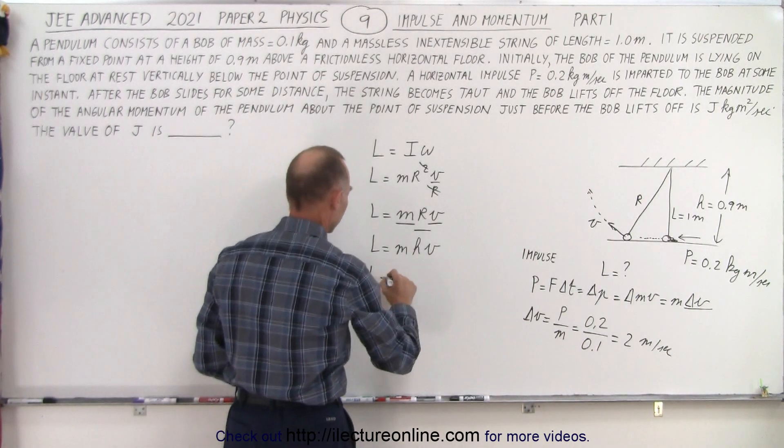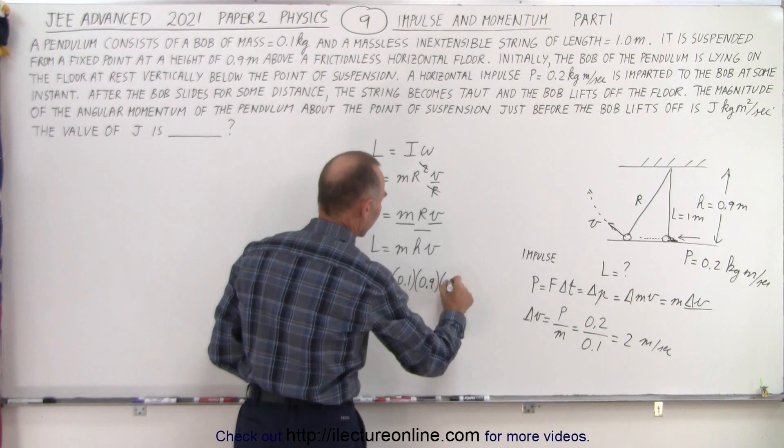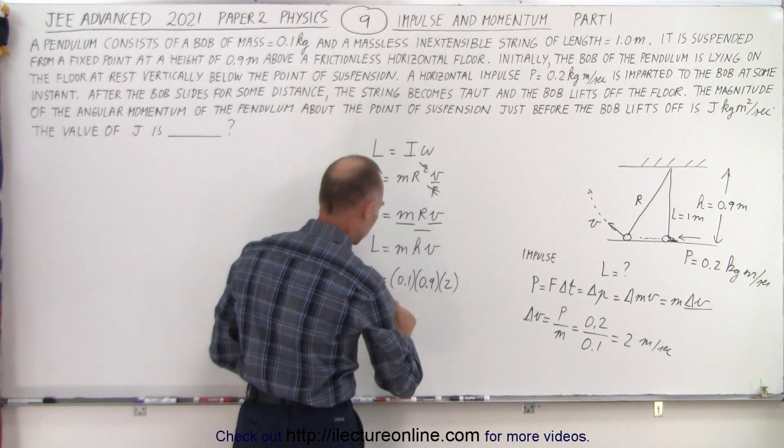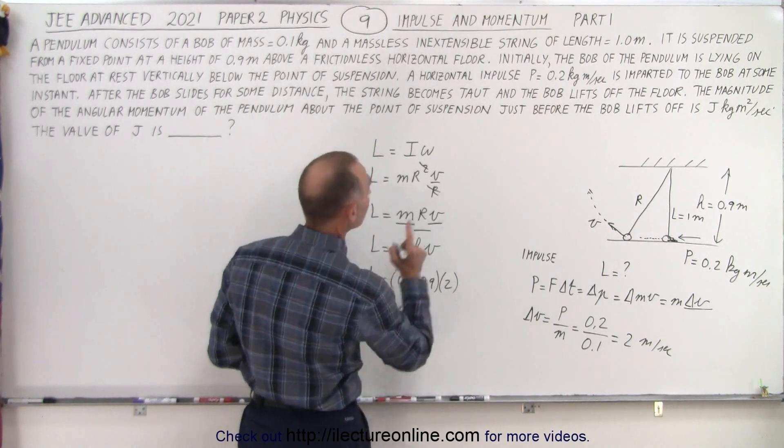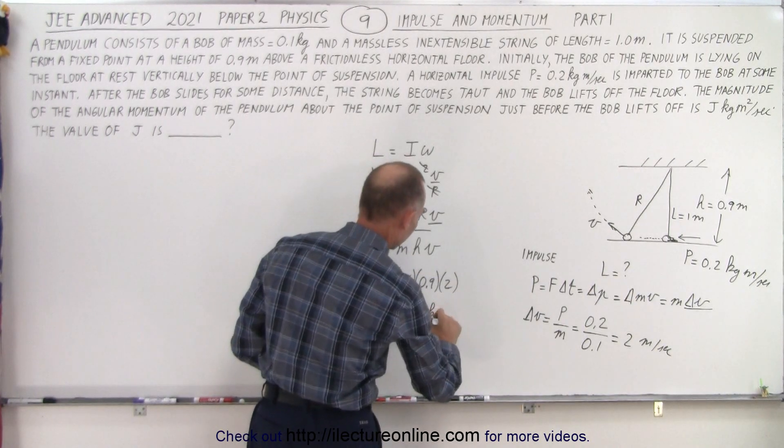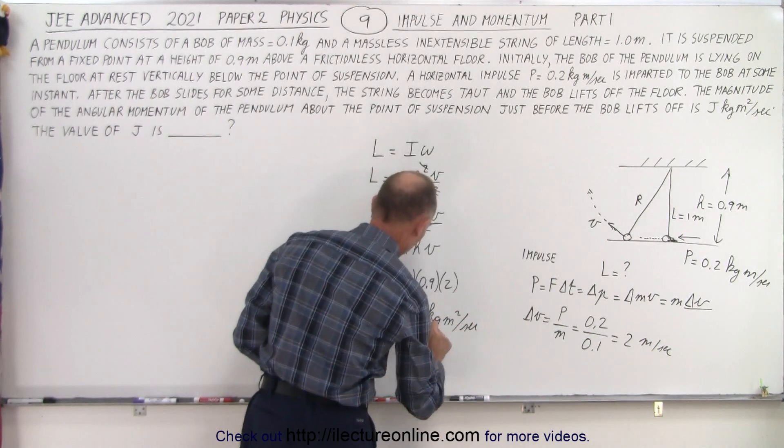We have L equals the mass 0.1 times the height 0.9 times velocity 2 and so that would be equal to 0.18. The units are kilograms meters squared per second and so the number we're looking for here is 0.18.